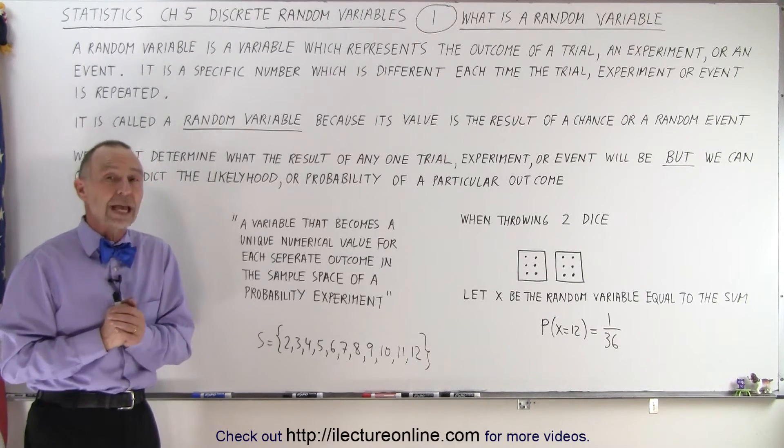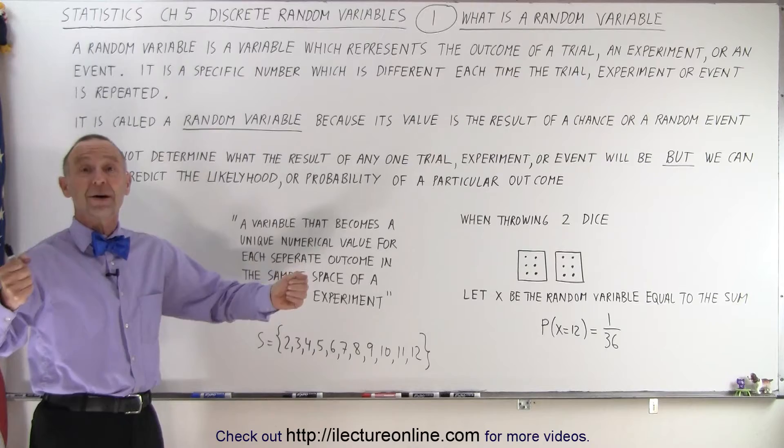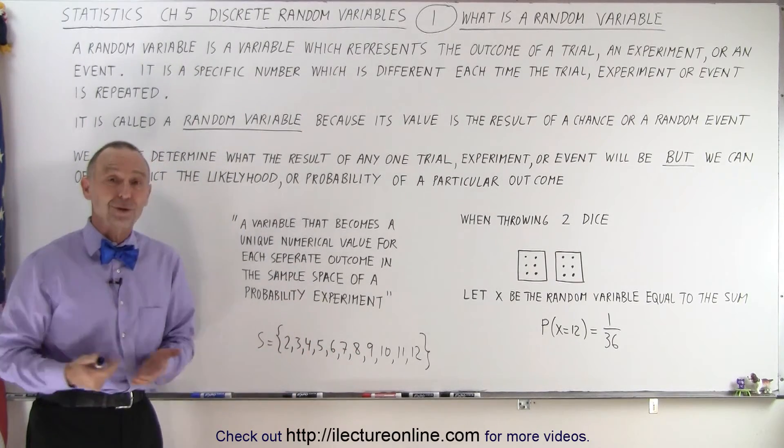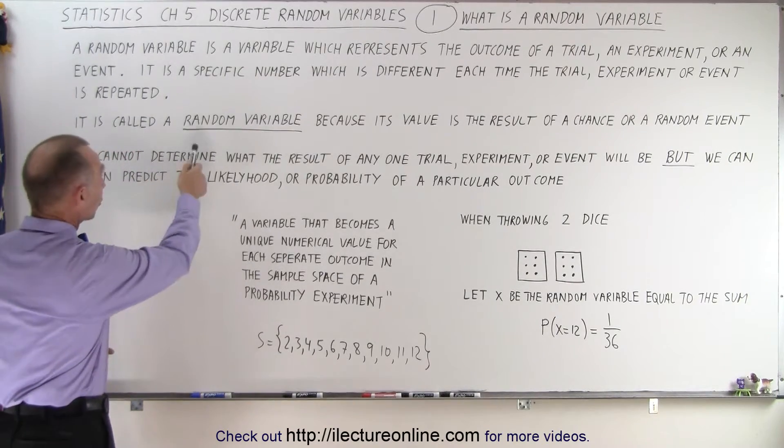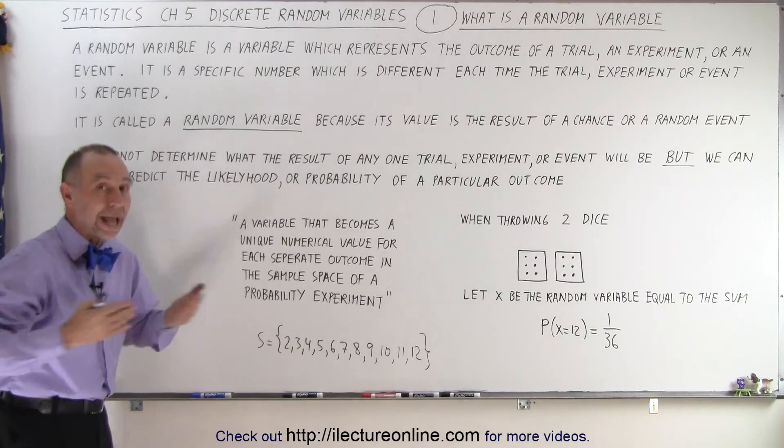You never know what you're going to get. Sounds like something I've heard before. You open up a box of chocolates, you don't know what you're going to get. You throw dice, you don't know what you're going to get. That makes the variable random. It is called a random variable because its value is the result of a chance or a random event.